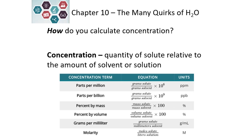Percent mass follows the same idea: mass of the solute over mass of the solvent. It could be grams or kilograms, but the units must be the same for the numerator and the denominator. Because it's a percent, we multiply by 100, and the units are the percent sign. For percent volume, we use volume of solute over volume of solvent times 100. For grams per milliliter, it's grams of solute over milliliters of solvent, with units of grams per milliliter.